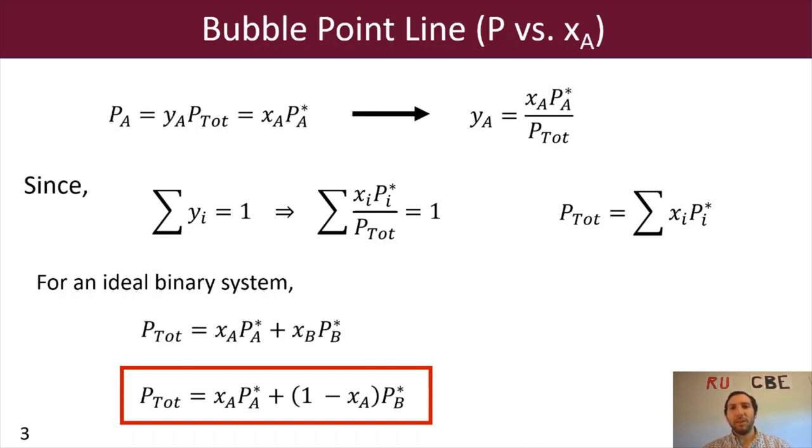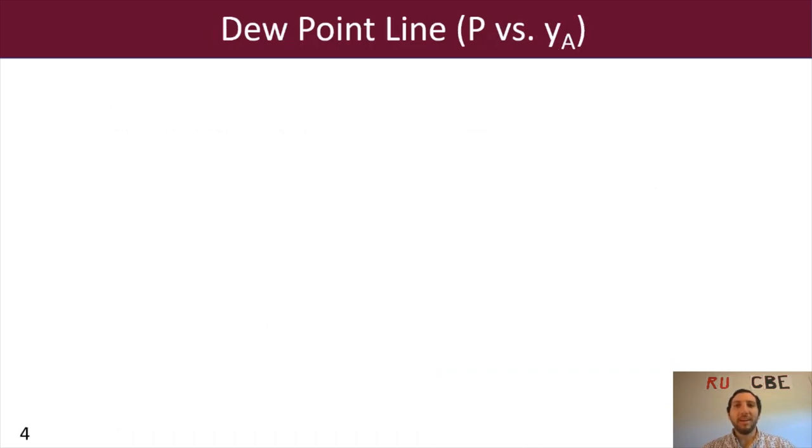Now, what we now will do is talk about the dew point line, which is a little bit more complicated, but not much. So for our dew point line, we're going to use that initial equation using Dalton's law and Raoult's law. We got PA equals YA P total equals XA PA star.